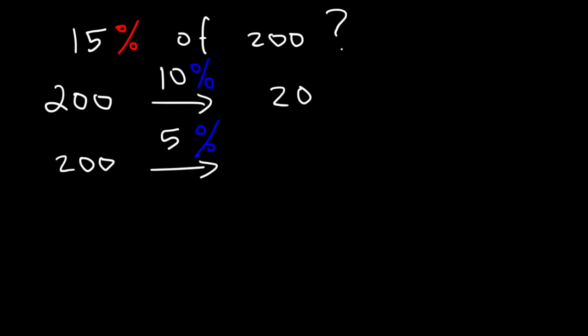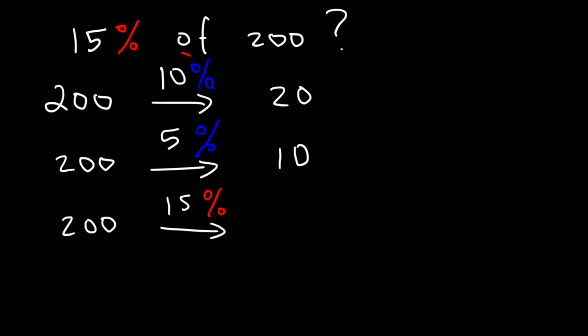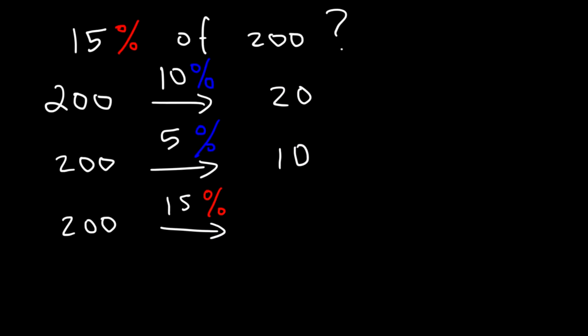Now if 10% of 200 is 20, what is 5% of 200? 5% is half of 10%, so half of 20 is 10. Since 10% plus 5% adds up to 15%, 20 plus 10 must represent the value of 15% of 200, which is 30.